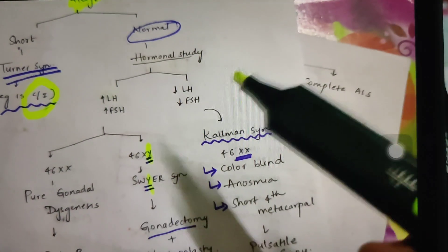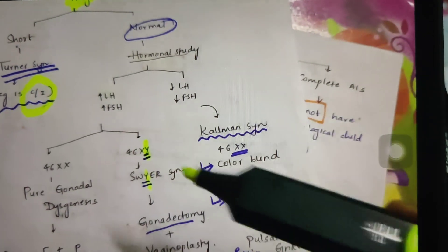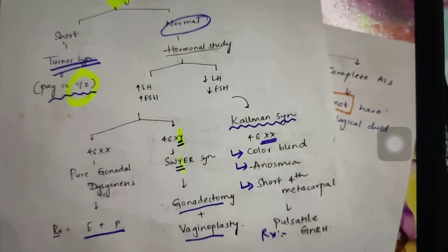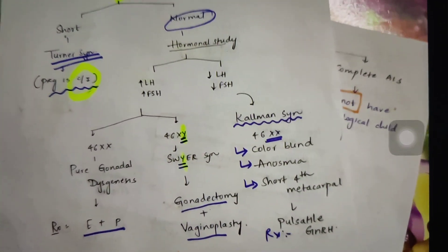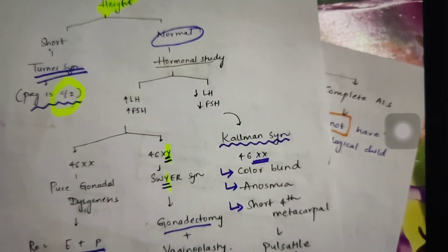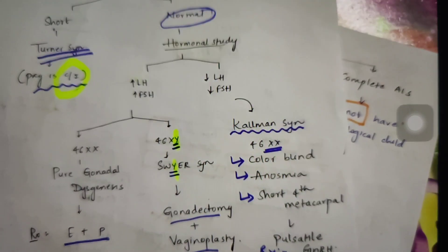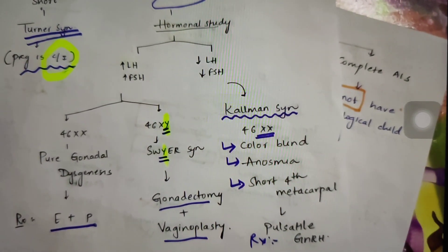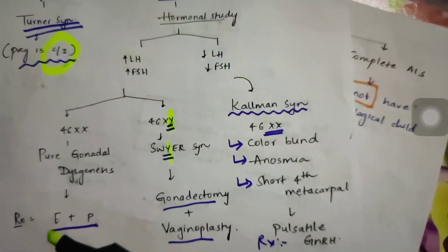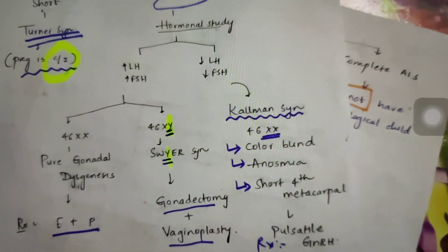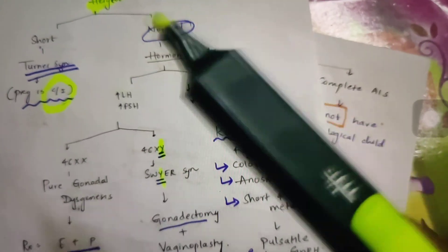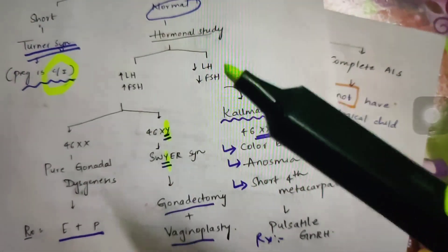Whereas if both LH and FSH are decreased, then it is called Kallmann syndrome. Kallmann syndrome, as all of us know, is defect in hypothalamic-pituitary axis. So the patient presents with color blindness, anosmia, and short fourth metacarpal. In Kallmann syndrome, the treatment you need to give is pulsatile GnRH. Whereas for Swyer syndrome it is gonadectomy plus vaginoplasty. And pure gonadal dysgenesis, it is combination of estrogen and progesterone. The gonads are dysfunctional here. You need to provide external hormones: estrogen plus progesterone. So this is regarding the other half of the flowchart where secondary sexual characteristics are absent. You need to go for height and then karyotyping, hormonal study, and so on.